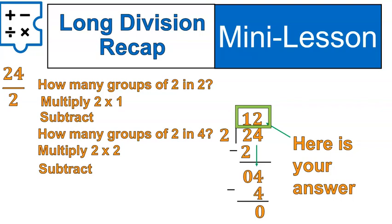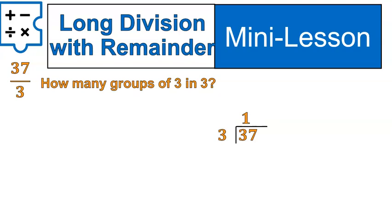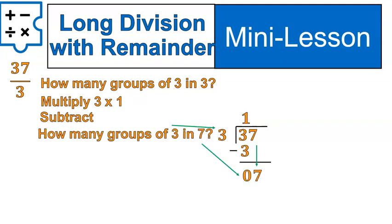Before we get into that, I do want to say, sometimes you won't get a nice even answer up top. You won't get a 12 up there. Sometimes, you'll have division with a remainder. If that's the case, then it would look like this. We'll have 37 divided by 3. We're going to follow all the same steps. How many groups of 3 inside of 3? 1. 1 times 3 gives us 3. Then, we subtract to get 0.